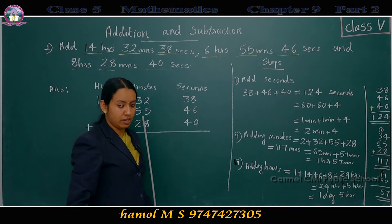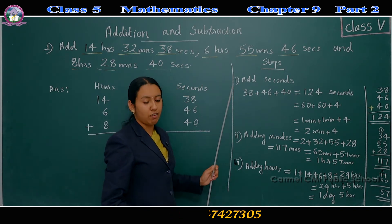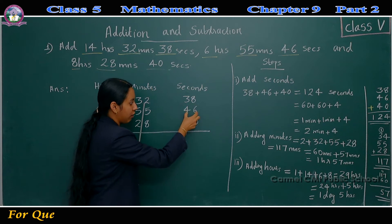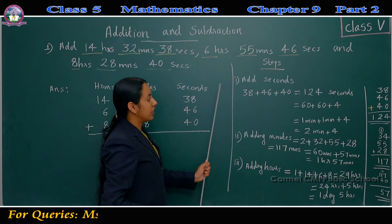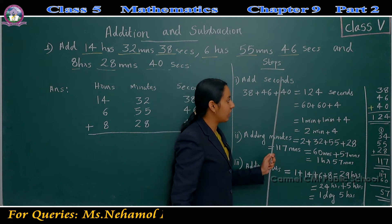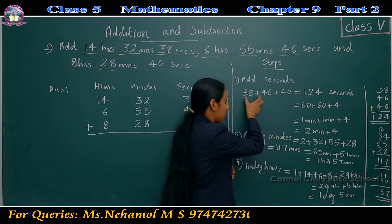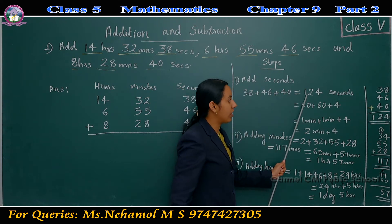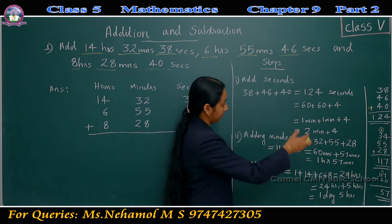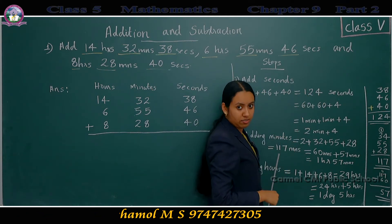Now we have to follow certain steps. First step: adding seconds. The seconds are 38, 46, and 40. 38 plus 46 plus 40 is equal to 124. Adding these three numbers, you will get 124.